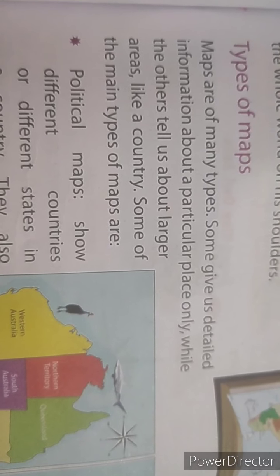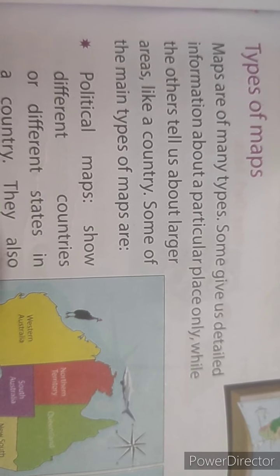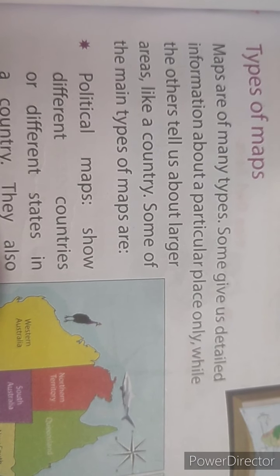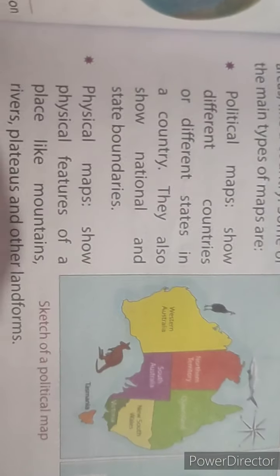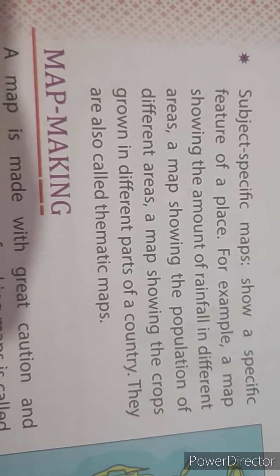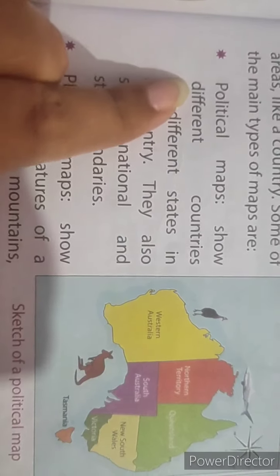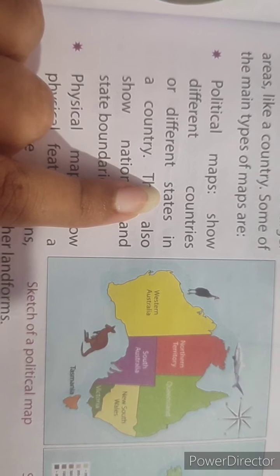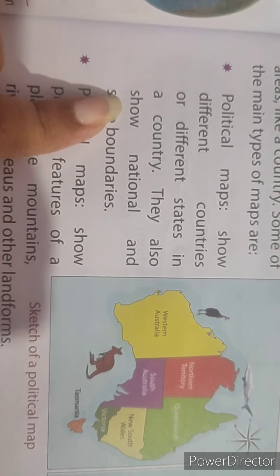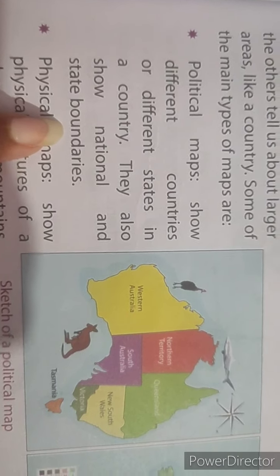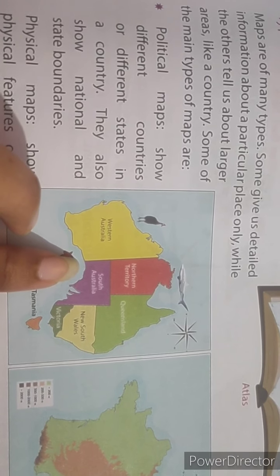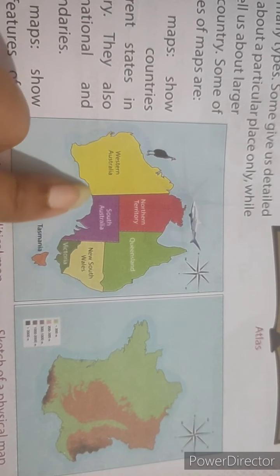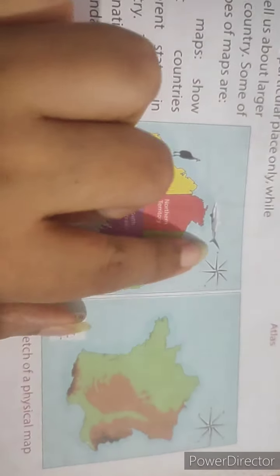Types of maps. Maps are of many types. Some give us detailed information about a particular place only, while others tell us about larger areas like a country. Some of the main types are political maps, physical maps, and subject-specific maps. Political maps show different countries or different states in a country. As you can see here in the picture, it is a sketch of a political map — this one is a map of Australia.